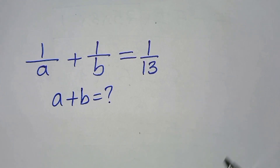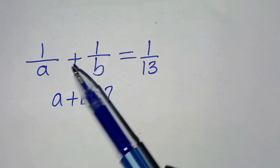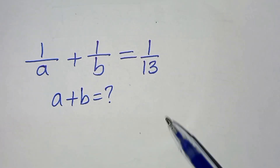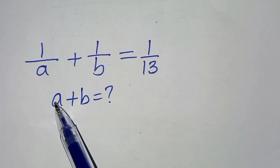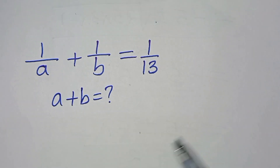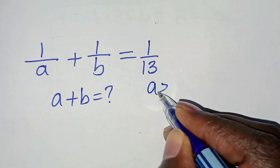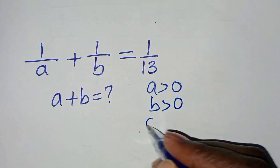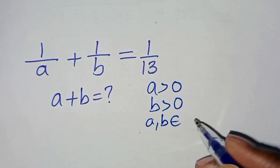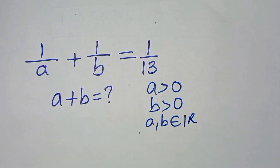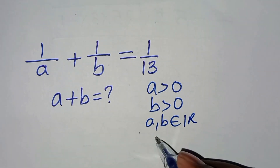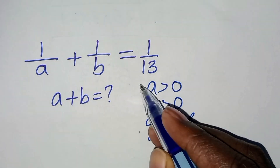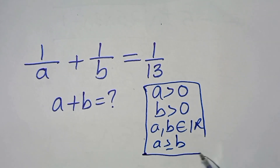You are welcome to solve this nice algebra problem, which is 1 over A plus 1 over B, equal to 1 over 13. The question is: what is A plus B? Given that A is greater than 0, B is greater than 0, A and B are real numbers, and A is greater than or equal to B. These are the four conditions that we have.